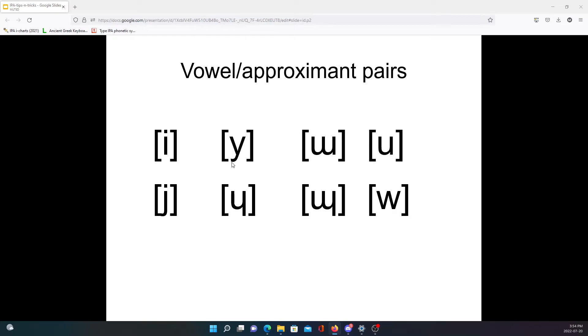Remember, descenders are typical of consonants, not vowels. The y being the only vowel symbol with the descender, that is true. So you can see the connection between the vowel symbol and the approximant symbol here.